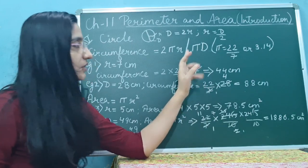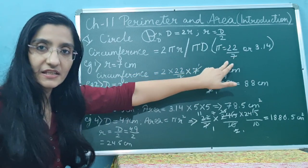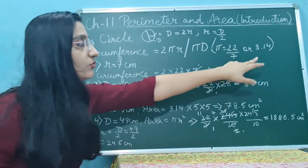The circumference formula is 2πR, and the other formula is π into D, that means pi into diameter. Pi value is 22/7, or you can consider it as 3.14. If you have mentioned that you need to take this value 3.14, then you have to take this value. If you have not mentioned anything in the question, then you can take this value.